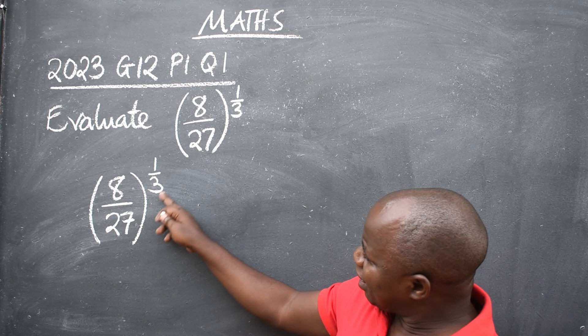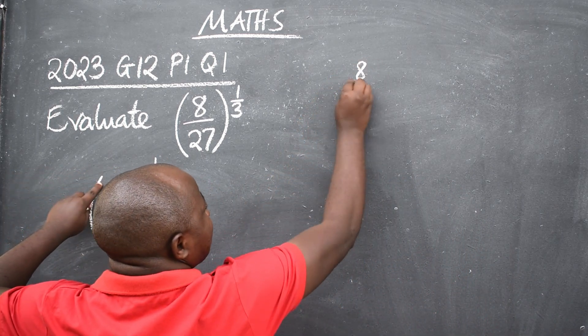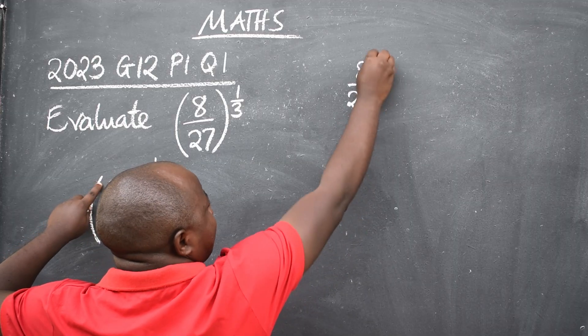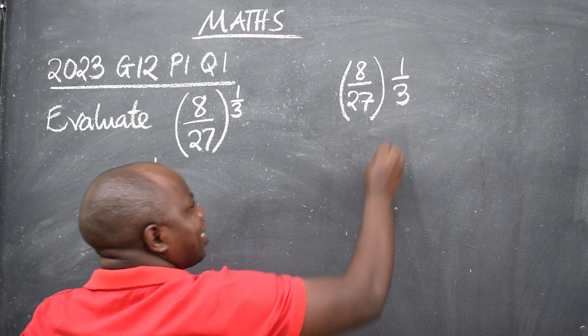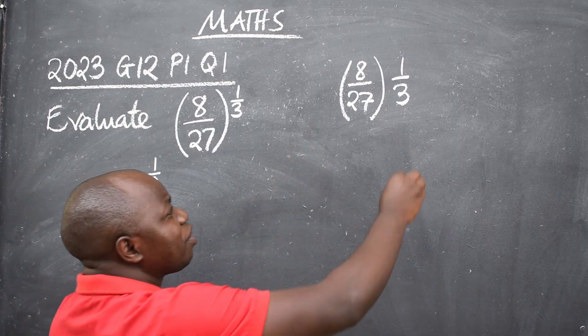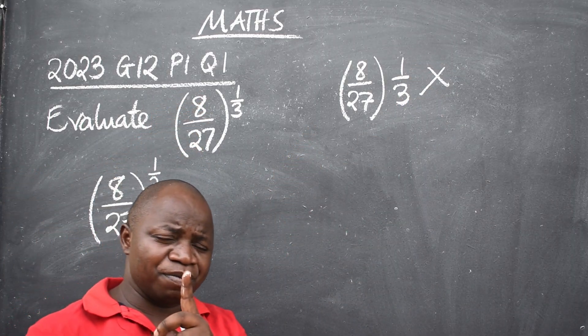Now this is the power and I want you to take note of this. When we have 8 over 27 the power is raised here. Not the way you write some of you like this. This is wrong. Look at the way I'm writing. That's the first principle there.